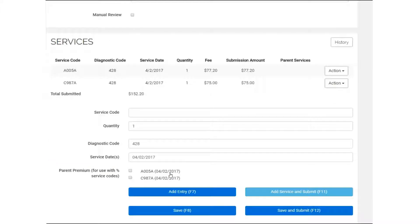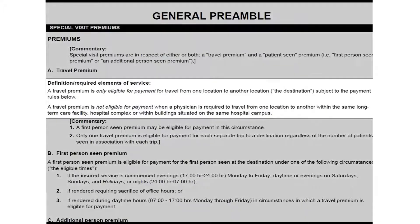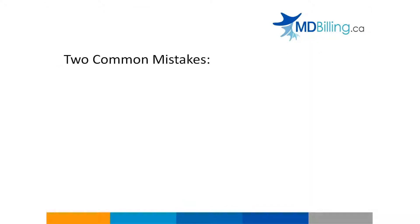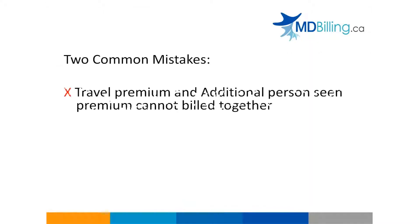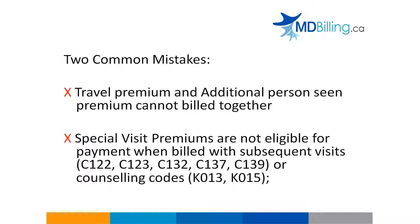Key points to know when billing premiums: travel premium can only be billed if the physician was outside the hospital premises. There are two common mistakes: one is billing travel and additional person seen premiums together, and the other is billing special visits with subsequent visits or counseling codes.